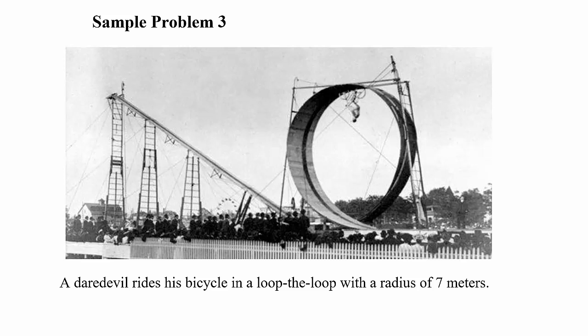In this video, we're going to look at several examples where things are moving in a circular path where there's more than one force acting along the radius. In this first situation, we have a daredevil riding a bicycle in a loop-de-loop with a radius of 7 meters. We'll find the force of the track at the top and bottom of the loop, and figure out the minimum speed needed to not lose contact.